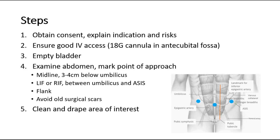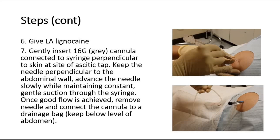Give local anesthesia, which is lignocaine. Then start by gently inserting the 16-gauge cannula connected to the syringe perpendicular to the skin at the site of the ascitic tapping. Keep the needle perpendicular to the abdominal wall and slowly advance the needle while maintaining constant gentle suction through the syringe. When a good flow is achieved, remove the needle and connect the cannula to a drainage bag.